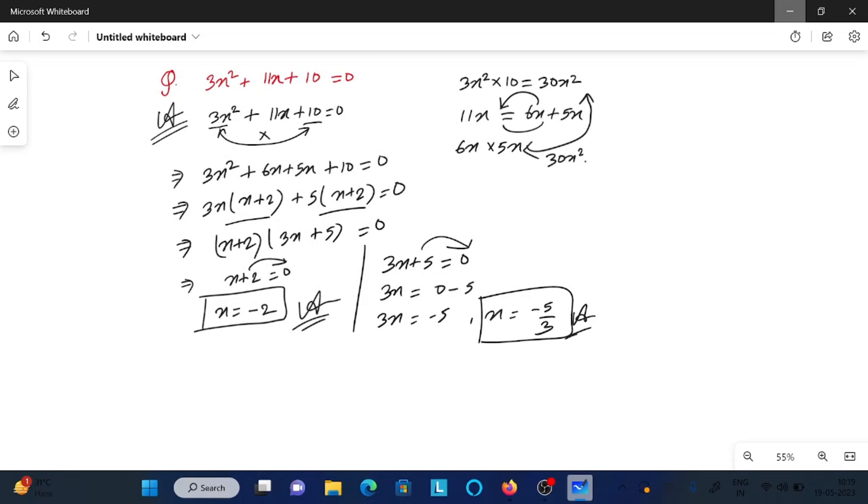Now I'm going to explain in Hindi. First, multiply the terms - 3x square into 10. We take 11x in the middle and split it. We test different combinations until we find 6x and 5x that satisfy the condition. Calculate the values: minus 2 and minus 5 by 3, which are the answers.